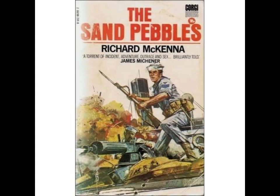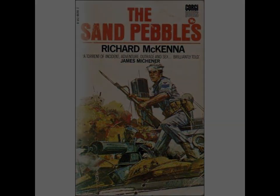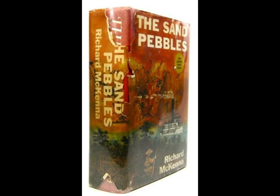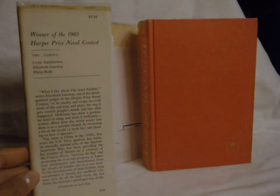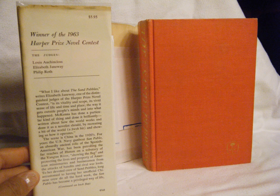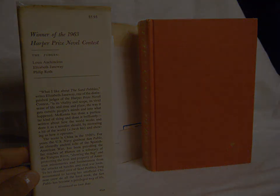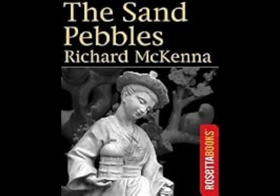Holman's relationships with the other characters reflect the broader themes of alienation and conflict. His connection with Meili, a Chinese woman caught between her own culture and the American presence, mirrors the larger struggle between the two worlds. Their relationship is tinged with tragedy, as they both occupy liminal spaces — Holman as a man who doesn't fit into the American naval system, and Meili as a woman torn between her loyalty to her people and her association with foreigners. Holman's eventual effort to save Meili is an attempt to overcome the barriers between them, yet it also reveals his limitations in understanding the complexities of Chinese society and culture.